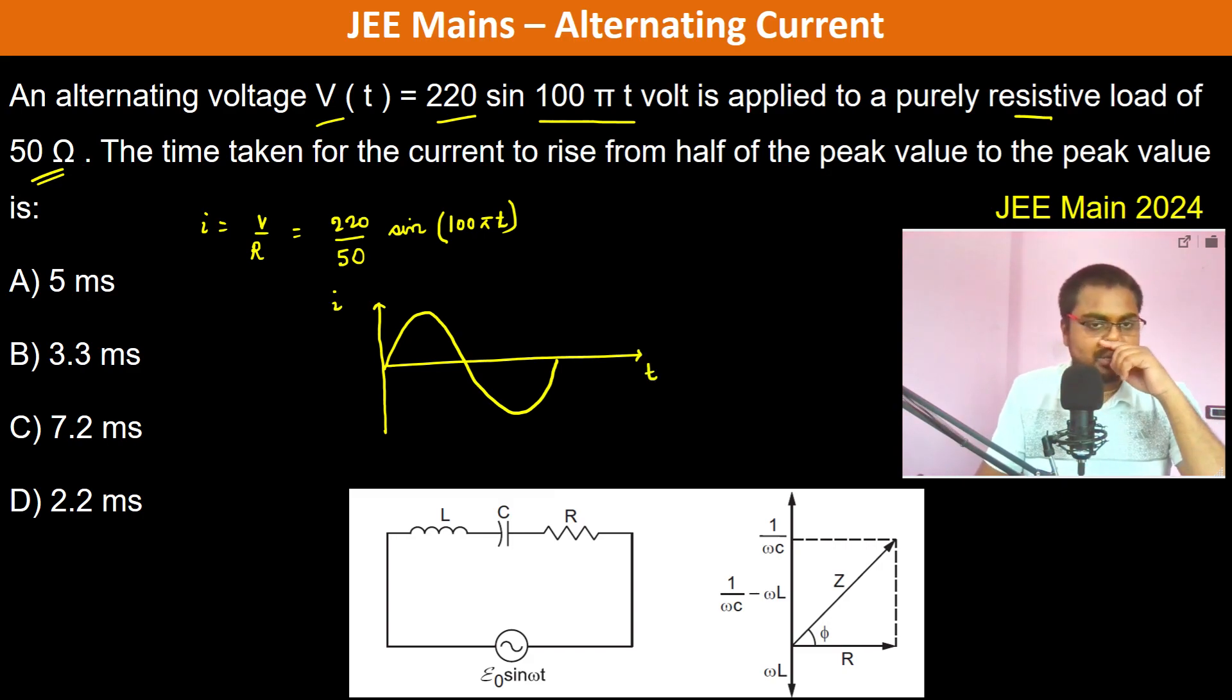The time taken for the current to rise from half of the peak value to the peak value. So basically what is being said is, here sin(θ) should be such that it should be 1/2, so therefore it is 30 degrees.